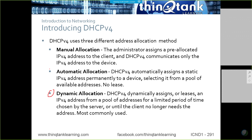Automatic allocation is pretty much the same thing as dynamic, but in automatic allocation there's no lease period. This is what most ISPs do for your home routers — they assign you an IPv4 address from a pool but don't require you to renew the lease. You can keep that address for however long you need it.